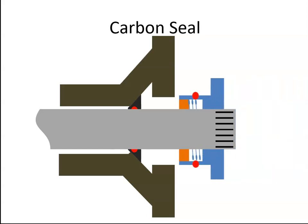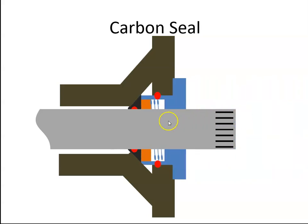The carbon seal comes in, and the carbon is now up tight against the mating ring. The springs here are forcing the carbon onto the mating ring.